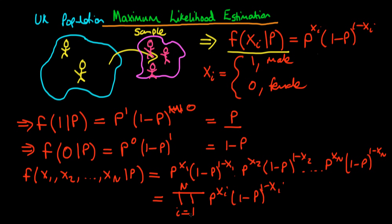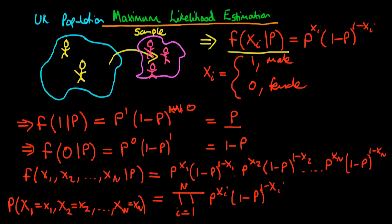This product term means we multiply together all of the terms specified by xi — it's the equivalent of summation notation but for products. When we multiply together each of these individual density functions, we obtain the joint probability: what was the probability that x1 took on that value, what was the probability that x2 took on its particular value, and so on up to xn. It's essentially the joint probability that we would have got this entire sample of observations from our population.